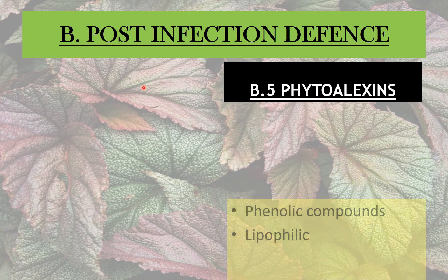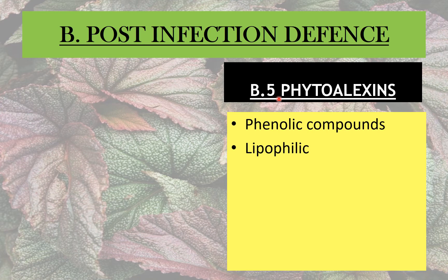The fifth type of biochemical defense mechanism is phytoalexins. 'Phyto' stands for plant and 'alexin' is a protective substance. Phytoalexins were first proposed by Muller and Borger in 1940, when they were working on late blight of potato caused by Phytophthora infestans. These are phenolic compounds — or in some cases non-phenolic compounds — that are different from the first group of phenolics because they are not pre-existing in the plant. They are not constitutive; they are only synthesized when there is injury or a physiological stimulus, produced de novo from scratch.